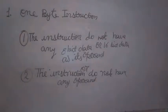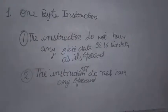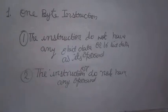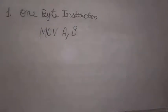We can say that the instruction that requires one memory location to store it in memory is known as a one byte instruction. This is the example of a one byte instruction.